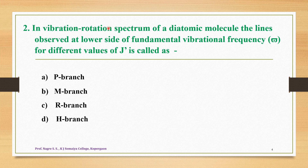Question 2: In the vibration-rotation spectrum of a diatomic molecule, the lines observed at the lower side of fundamental vibrational frequency (omega bar) for different values of J' is called as — option A: P branch, option B: M branch, option C: R branch, option D: H branch. The correct answer is option A — it is called as the P branch.